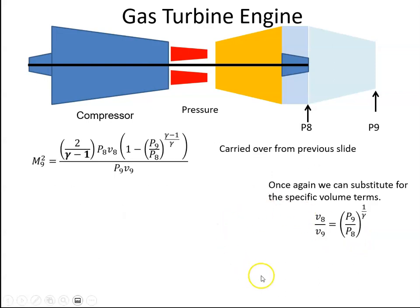We have P by V to the gamma is a constant in an adiabatic process. Just rearranging that equation, we can substitute in here for V8 and V9, and then we just bring the P8 P9 to one side.